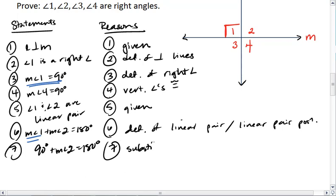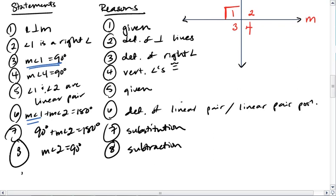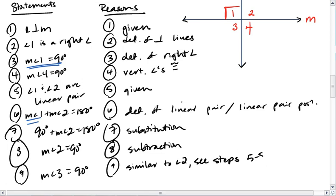And so measure of angle 2 equals 90 degrees. And that's by subtraction. Similarly, we can say measure of angle 3 equals 90 degrees. And the reason for that, we can say is similar to angle 2, see steps 5 through 8.